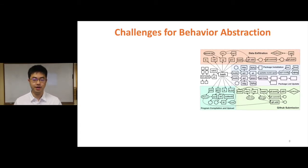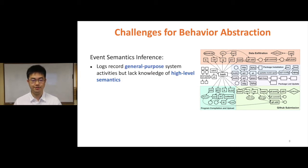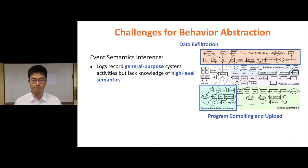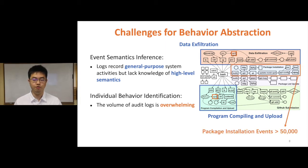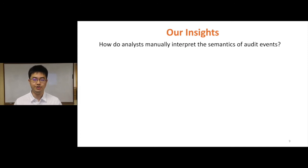There are two technical challenges for behavior abstraction. The first is event semantics inference — audit logs record general-purpose system activities but lack knowledge of high-level semantics. For example, both data exfiltration behavior and program compiling and upload behaviors include program compiling events; however, such events present different semantics and meanings. The second challenge is individual behavior identification, as the volume of audit logs is overwhelming — even a single packet installation behavior will include over 50,000 events. Besides, audit events are highly interleaving. Let's look at how an analyst manually interprets the semantics of audit events, using program compiling as an example.